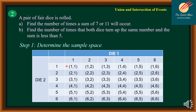We take the combinations. For example, starting with die one showing 1, we have (1,1), (1,2), (1,3), (1,4), (1,5), and (1,6). Similarly for die one showing 6, we have (6,1), (6,2), (6,3), (6,4), (6,5), and (6,6). The full sample space has 36 outcomes. Step number two: let A equal the event that a sum of 7 is obtained, and let B equal the event that a sum of 11 is obtained.